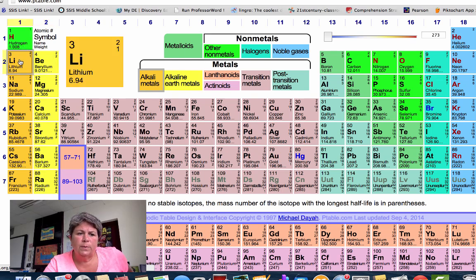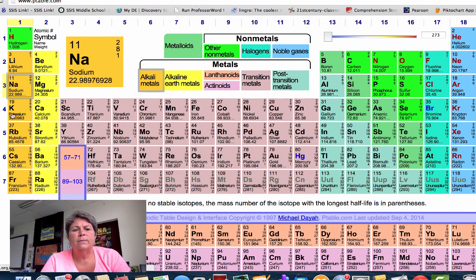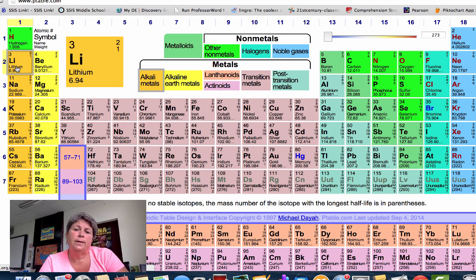If you remember, the periods over here, 1, 2, 3, 4, 5, 6, and 7, the rows or periods, told you how many electron energy levels there were. So all of the elements that are in period 2 have two electron energy levels where their electrons can be found.